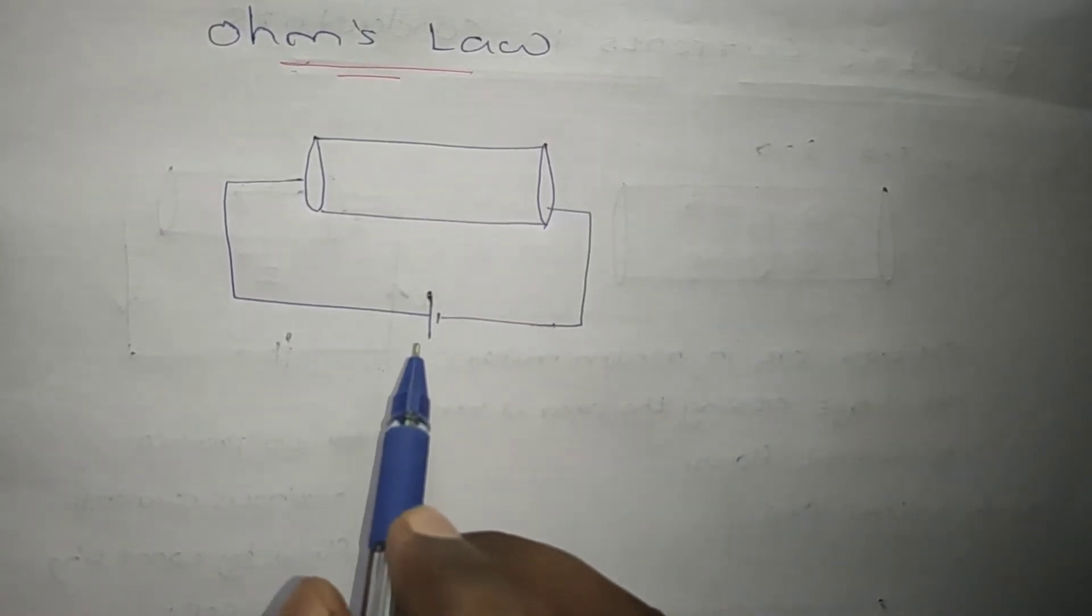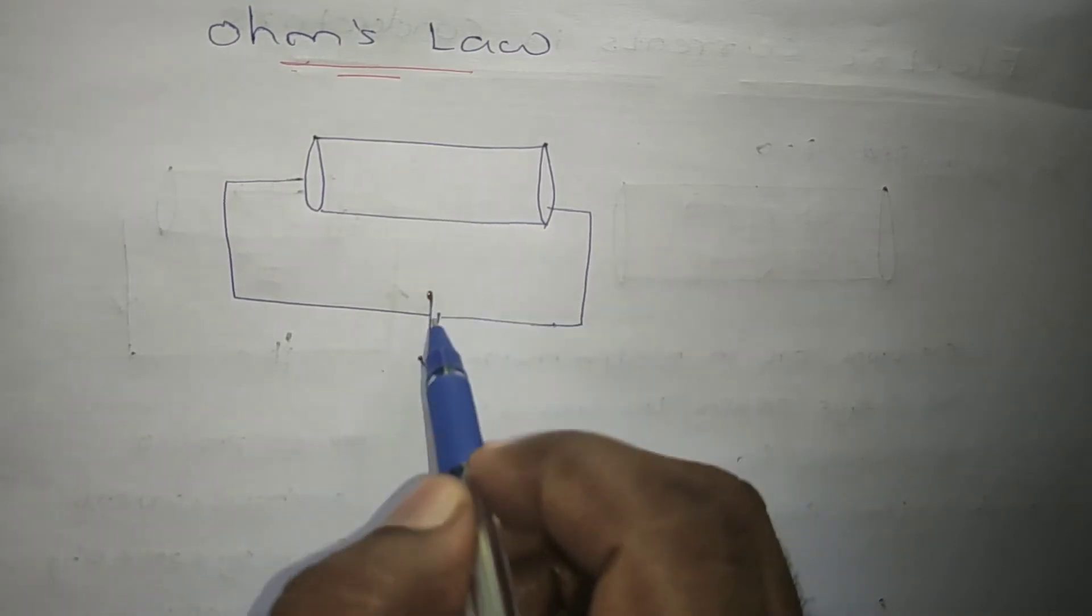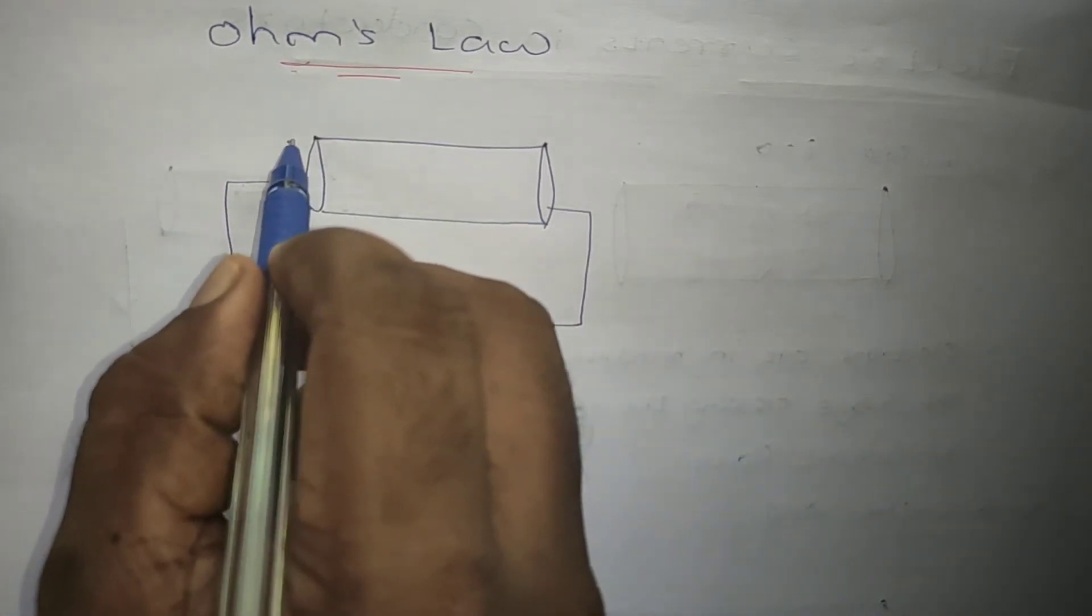To produce an external electric field there is a voltage source, a battery we have to connect. So if this battery is connected, what will happen? There is a positive charge at this end and negative charge, so there is an electric field.